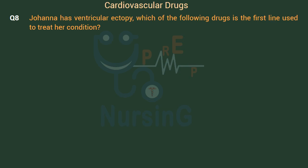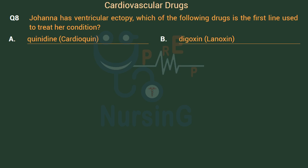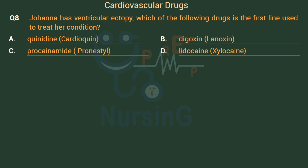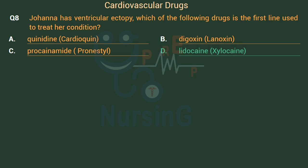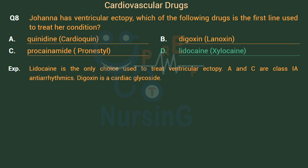Johanna has ventricular ectopy. Which of the following drugs is the first-line treatment? Option A: Quinidine (Cardioquin). Option B: Digoxin (Lanoxin). Option C: Procainamide (Pronestyl). Option D: Lidocaine (Xylocaine). The right answer is Option D: Lidocaine (Xylocaine). Lidocaine is the only choice used to treat ventricular ectopy. Options A and C are Class IA antiarrhythmics. Digoxin is a cardiac glycoside.